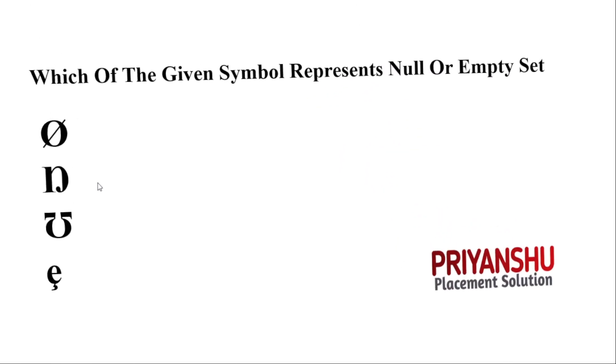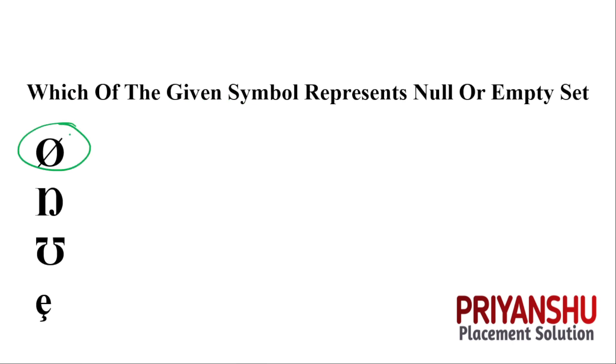The next question is: which of the given symbols represents a null or empty set? The answer is the symbol phi (φ). This is phi, and this is the infinity symbol. How many of you know that this symbol is called phi? Let me know in the comment box.